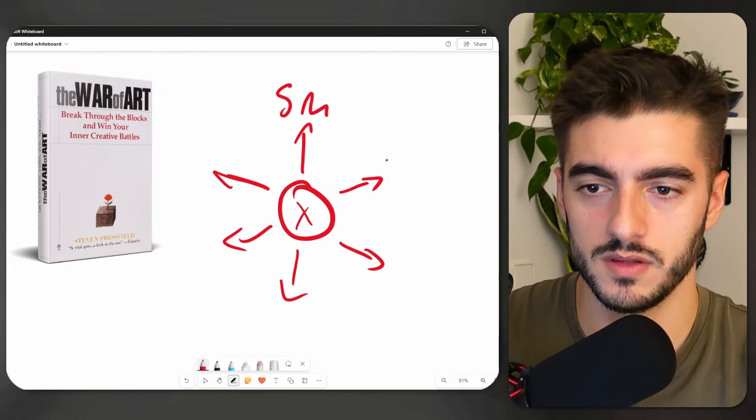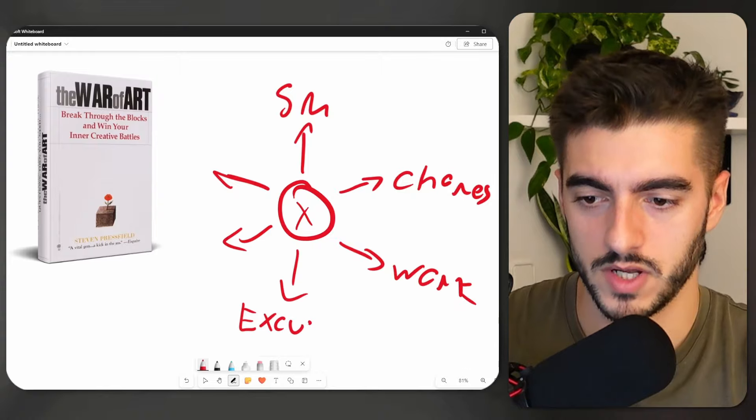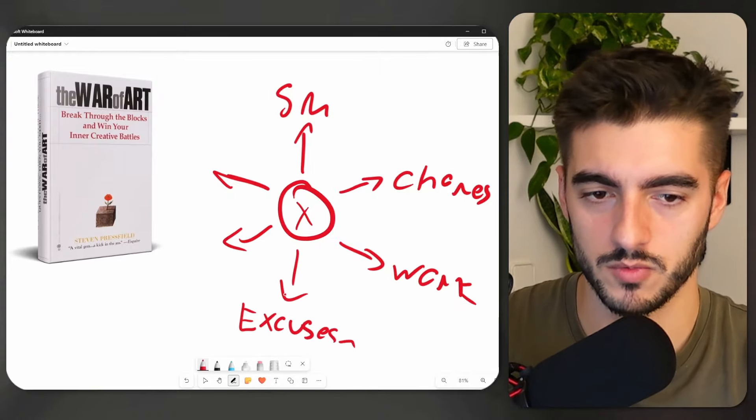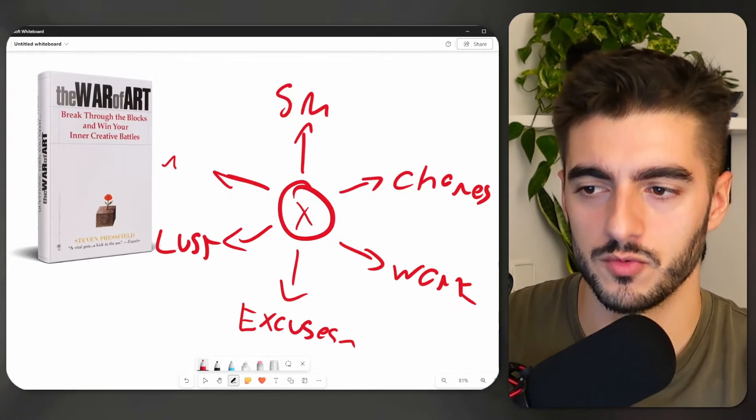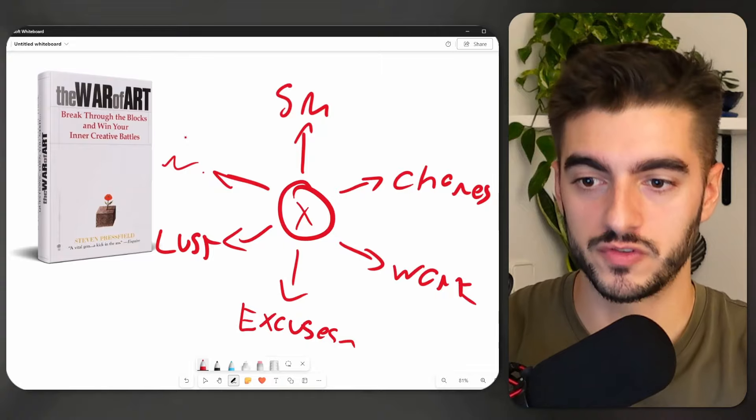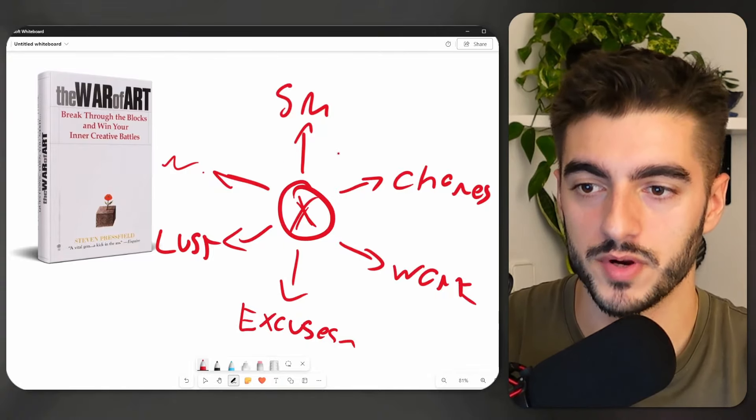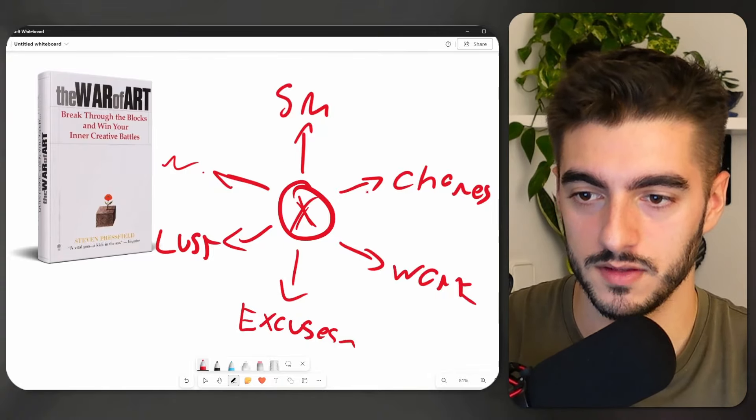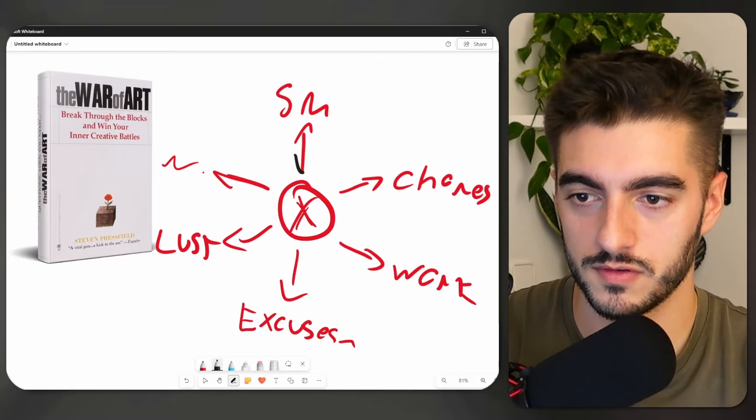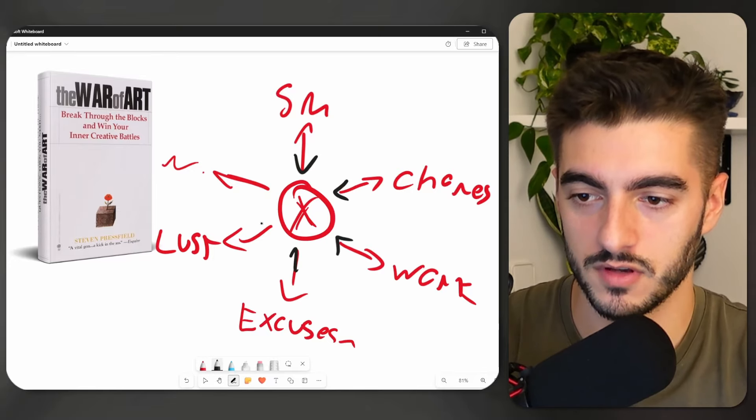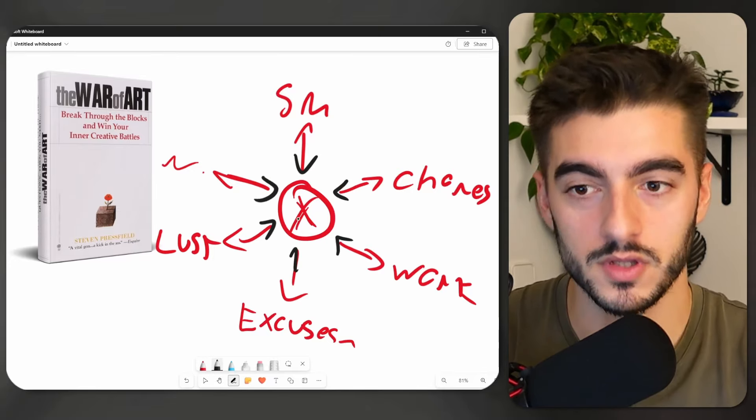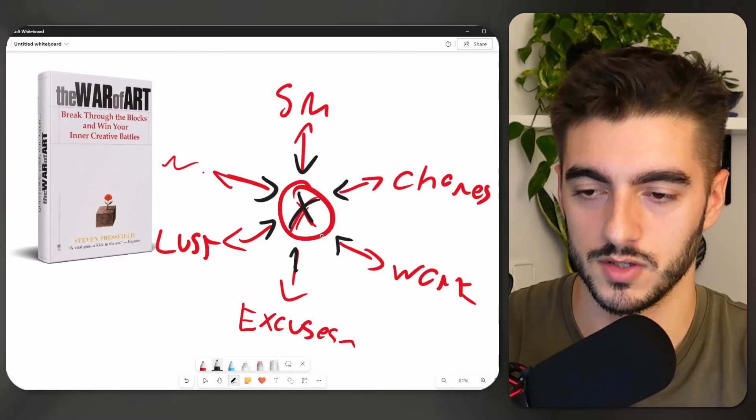It can be anything, social media, chores, just work, random excuses like I don't have time or whatever, even lust. There are so many reasons why you could be pushed away from the thing that's most important in your life. What Steven Pressfield talks about is that if you look at this, what you can do is to reverse these arrows. And now all of a sudden, all of these things are actually pointing you towards the most important thing that you need to do.